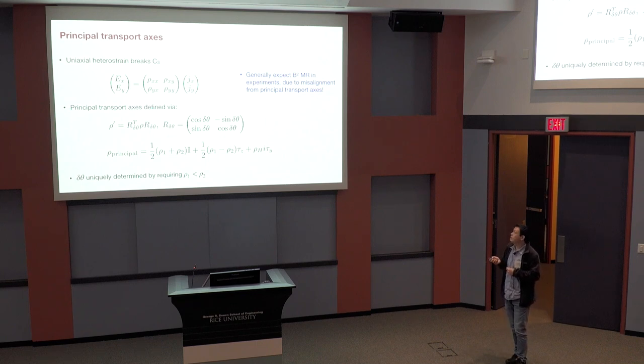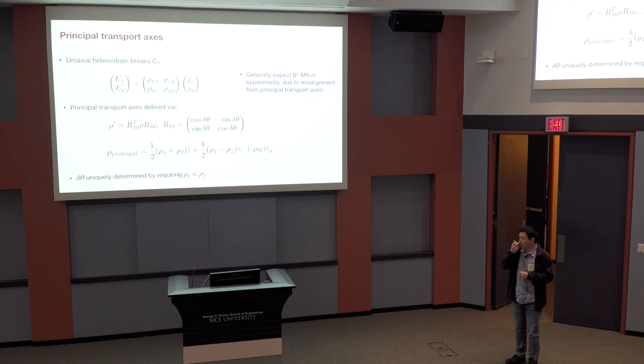And that is defined to bring this symmetric part of this tensor to the diagonal form, and then on the off-diagonal, I only have the Hall component. And this rotation angle can be uniquely determined by this criterion over here. And of course, now comes to the comparison to experiments.